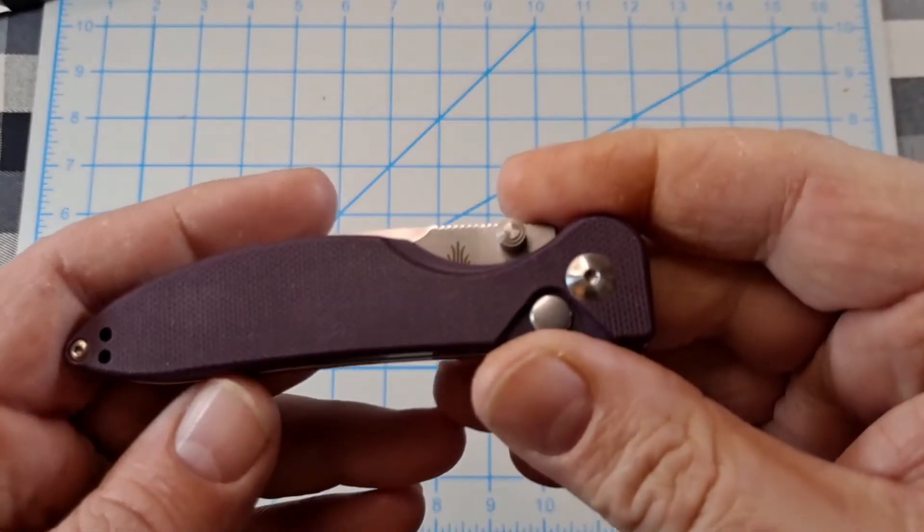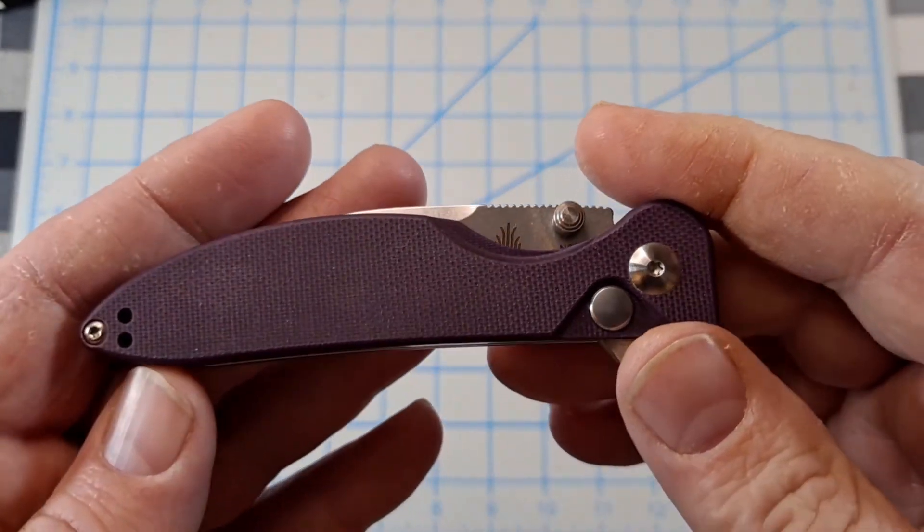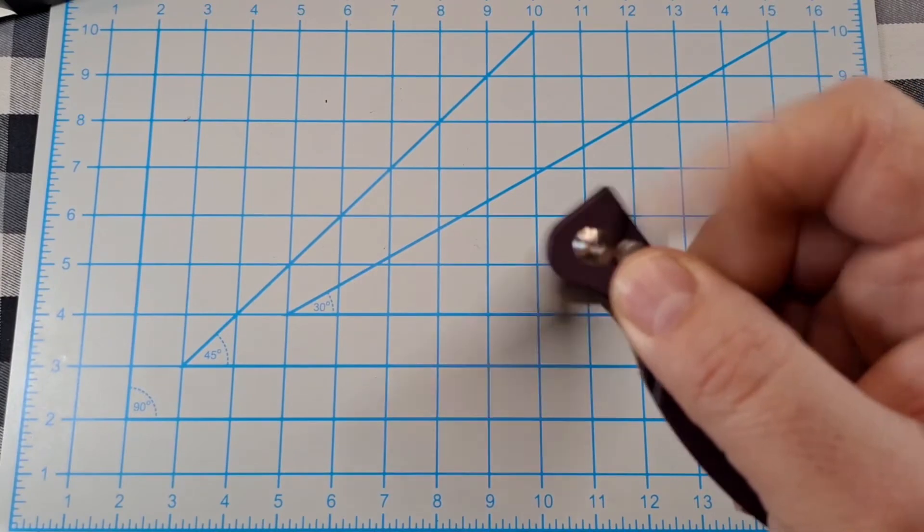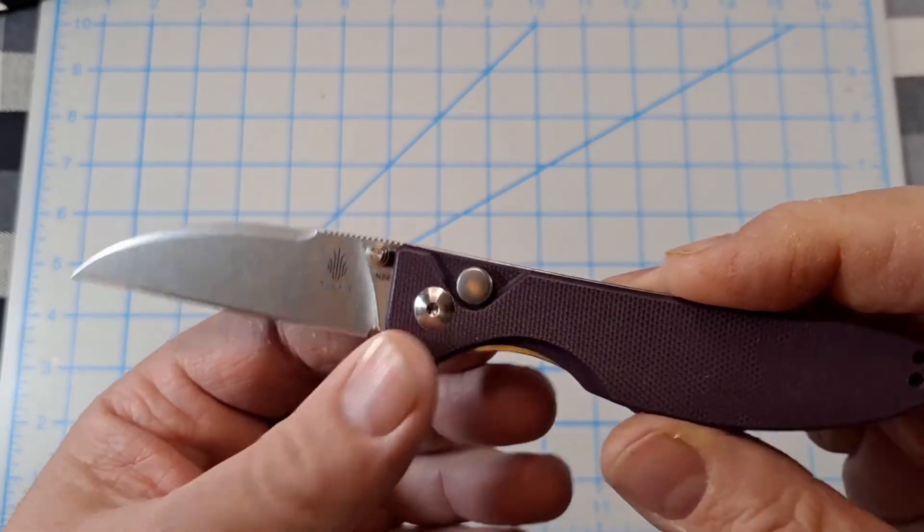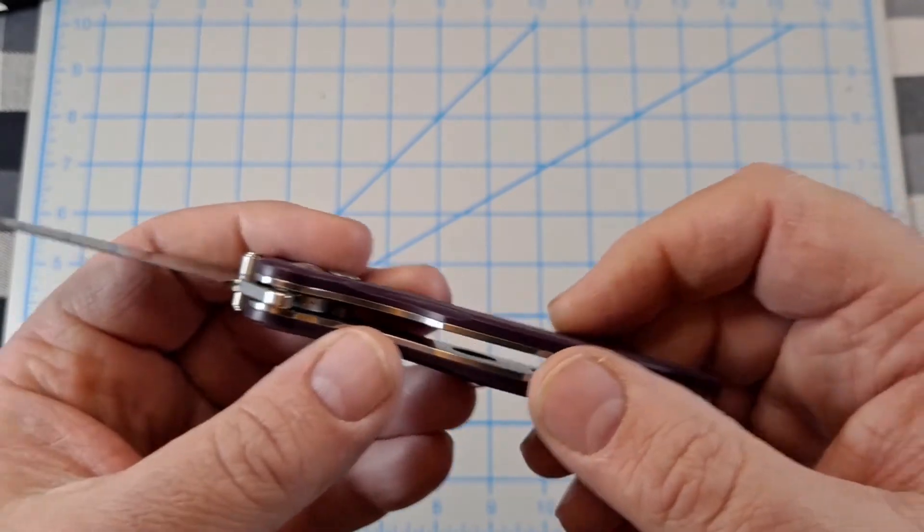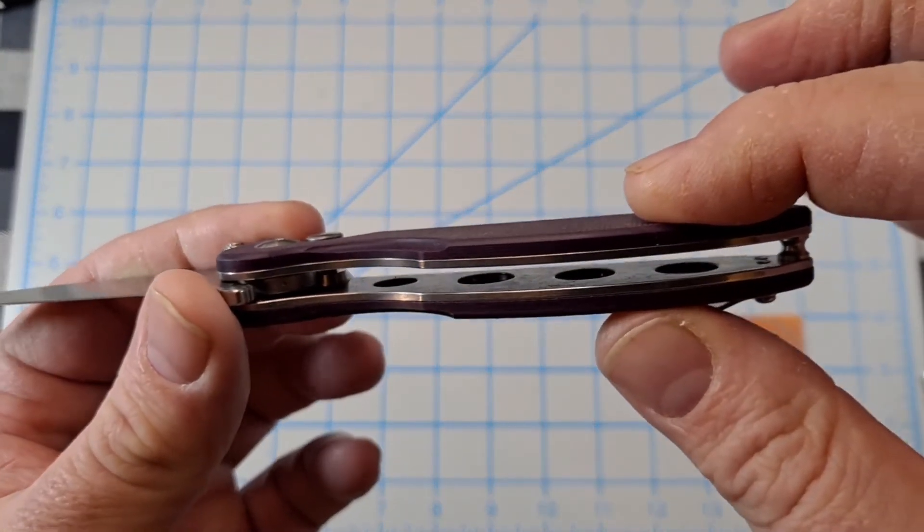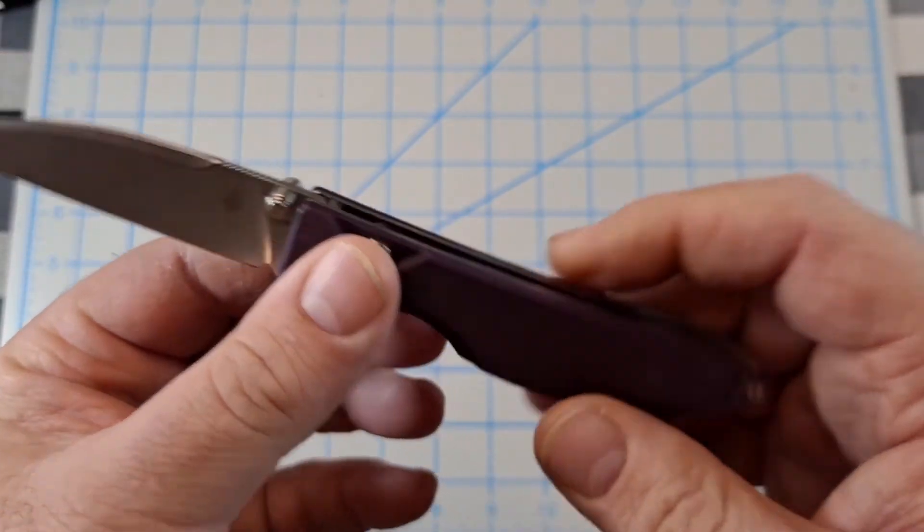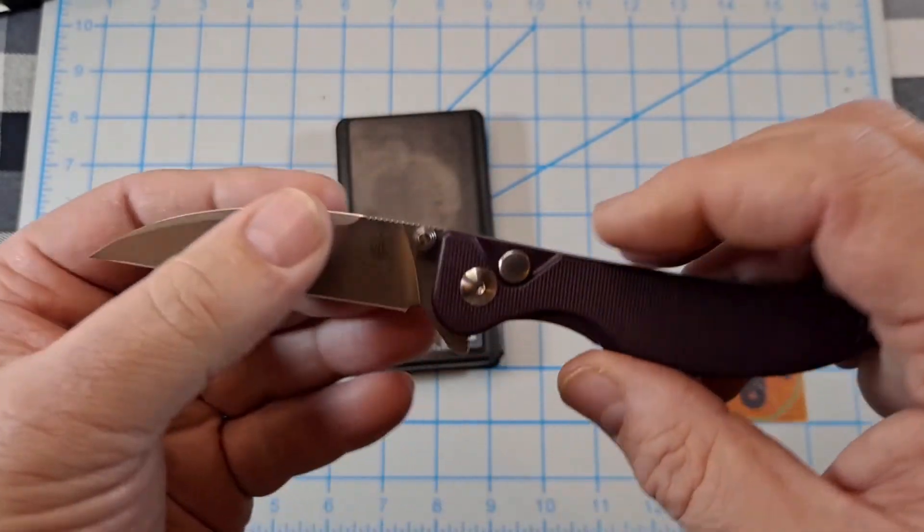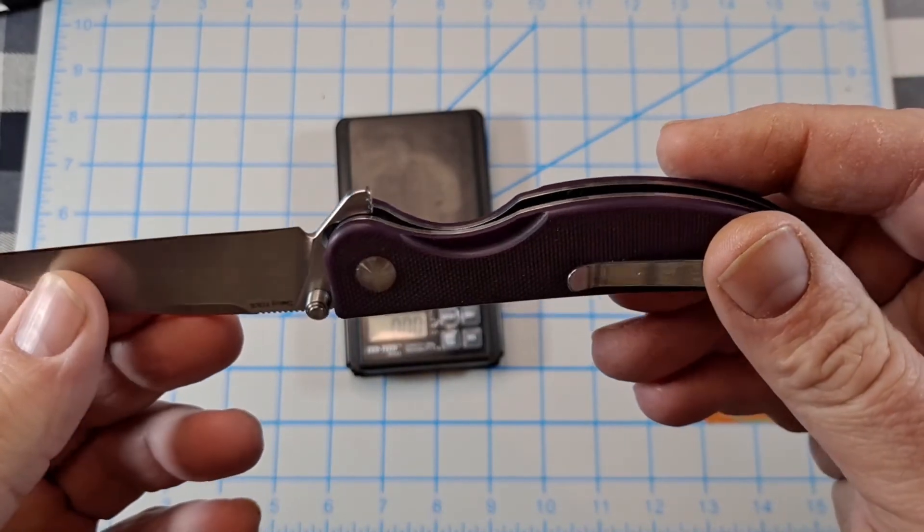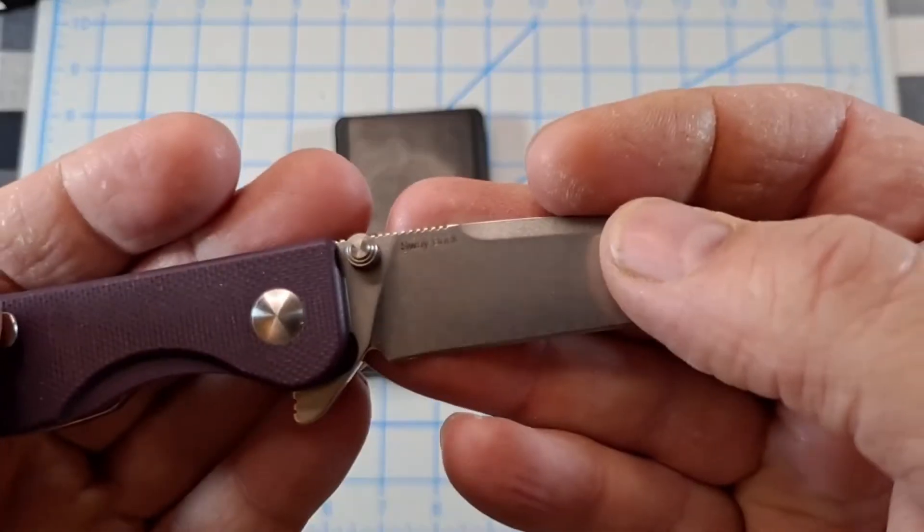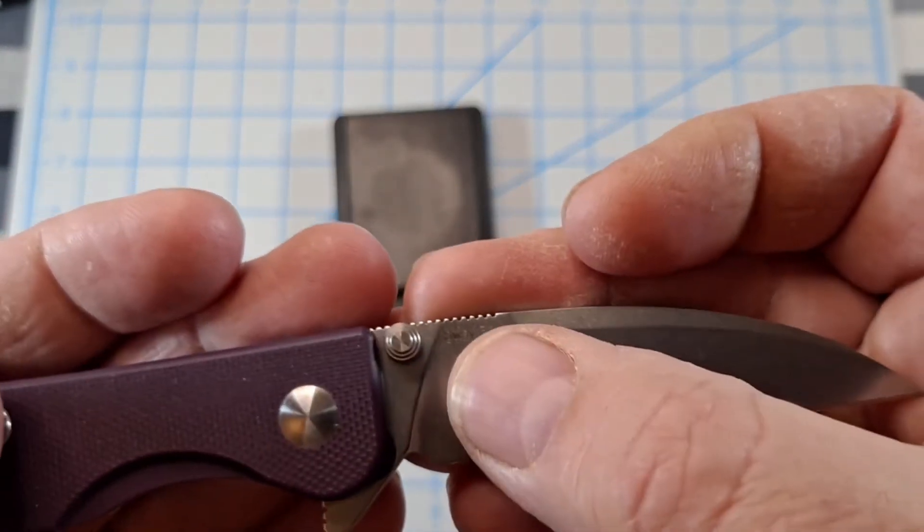Let's take a closer look at the scales. It's got good little jimping on the flipper tab. Tink, I like that. Wish my camera would focus today. Overall fit and finish, you can see it's got skeletonized liners in there. It's not heavy at all. It's listed at 2.72 ounces. Let me see what my scale says.